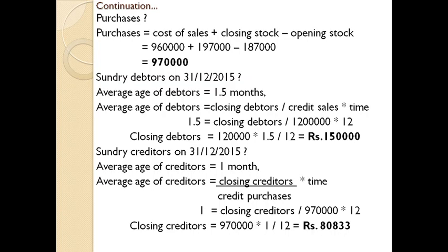So you may come across questions like this where ratios are given and you need to find other details specified in the question. Whenever you are given a ratio and need to find some other detail, don't get confused — just remember the equation you have learned. When a ratio is given, that is exactly the equation you begin with. Just go through all these application questions and the methods we have done. If you have any need for clarification, just follow it. That is all for today. Thank you.